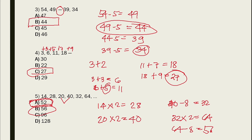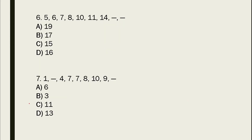For number 6, we have 5, 6, 7, 8, 10, 11, and 14. In this case, there are alternate functions here. The first sub-sequence is 5, 7, 10, 14, and the second is 6, 8, 11, and an unknown.